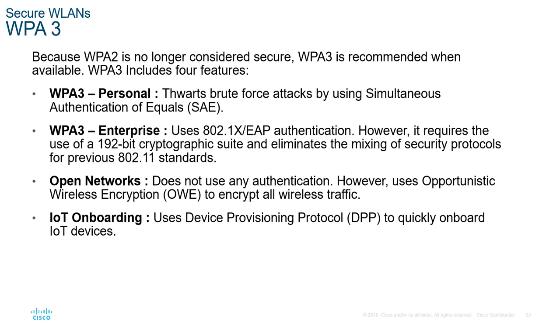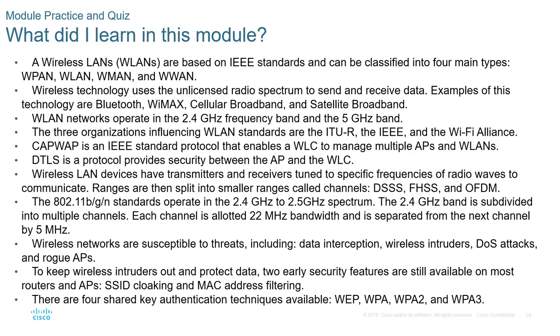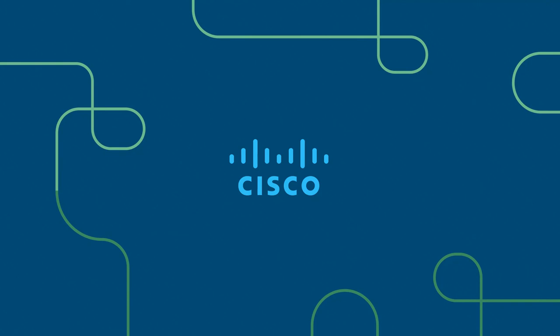WPA3 also introduces two additional connectivity types: open networks, which use Opportunistic Wireless Encryption (OWE) to encrypt all wireless traffic even without authentication; and IoT onboarding using the Device Provisioning Protocol (DPP) for quickly onboarding IoT devices. In summary, this chapter covered wireless connectivity standards, security, infrastructure, operational modes, speeds, frequencies, and channels.